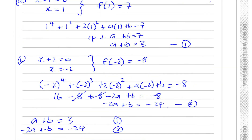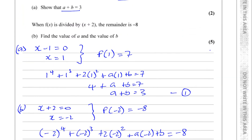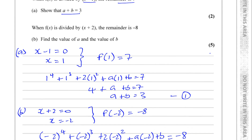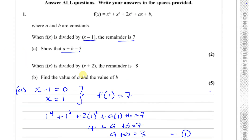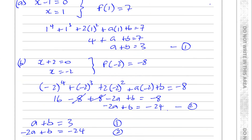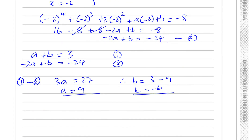So a equals 9 and b equals negative 6. The question asked us to find the value of a and the value of b — sometimes they might also say write down f(x), in which case you'd substitute a and b back into the equation. Here they just said find the values, so writing a equals 9 and b equals negative 6 completes question 1, parts (a) and (b).